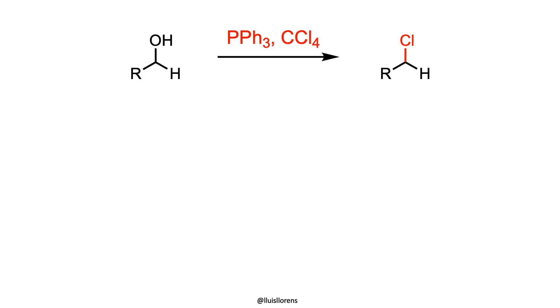With primary and secondary alcohols, the halide reacts in an SN2 fashion, proceeding with inversion of configuration if the carbon is asymmetric.